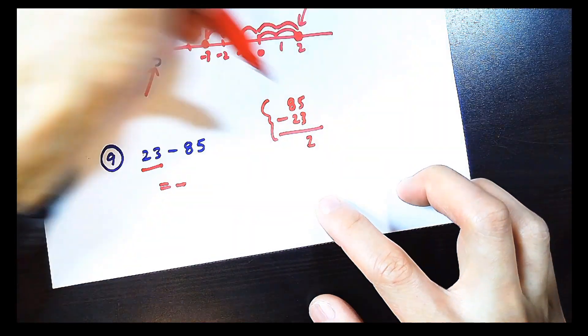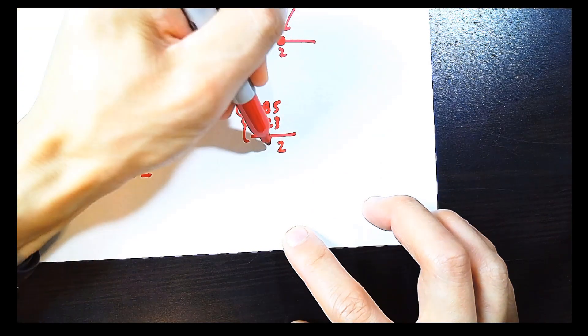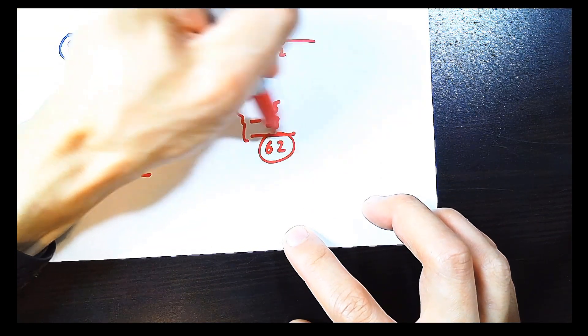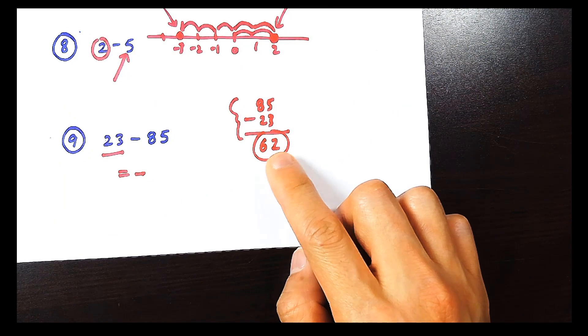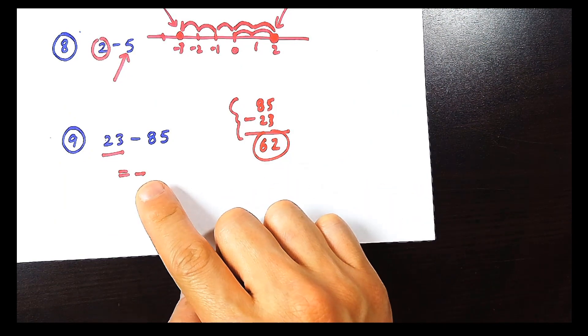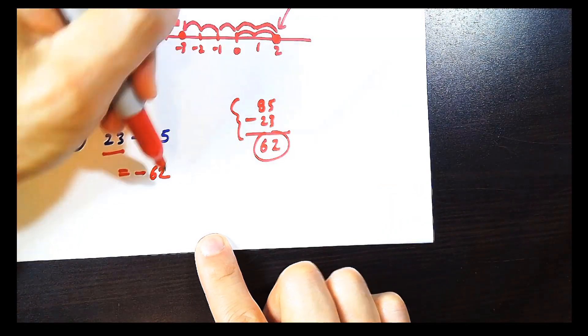5 minus 3 is going to be 2. 8 minus 2 is going to be 6. So this answer here is 62, but we're not going to say that we have 62 dollars. We're going to say that the final answer is that we have negative 62 dollars.